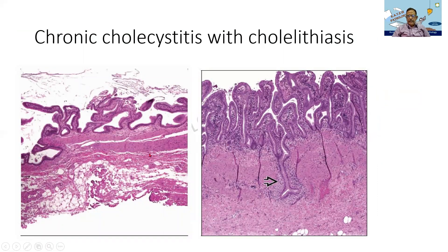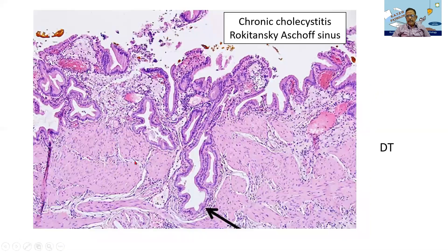Cholecystitis is an inflammation of the gallbladder. Here I am showing you the normal gallbladder mucosa — it has got finger-like projections which can be branching, and lower down will be the lamina propria and the muscular tissue. In a case of cholecystitis, there is a lot of inflammation and fibrosis. Because of that, the fibrous tissue will tend to pull down the mucosa — this is called Rokitansky-Aschoff sinus, classical of chronic cholecystitis, which you must write in your examination.